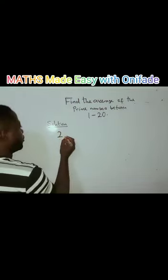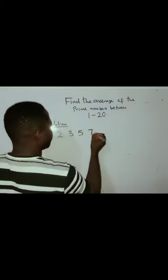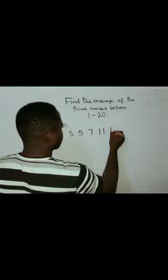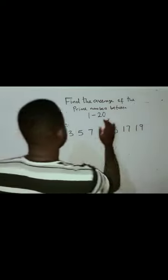So, the prime numbers are 2, 3, 5, 7, 11, 13, 17, and 19. So, these are the prime numbers between 1 to 20.